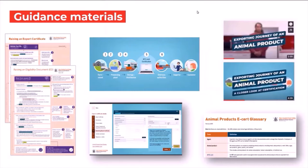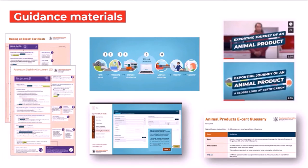I'll now pass over to Dan, who's going to talk you through some of our guidance materials. Recently, our team put together some guidance materials for users of AP eCert. On the left-hand side, you'll see two quick reference guides for raising an export certificate or raising an eligibility document. These are designed to be printed out and put next to your computer while you're raising them — it's like a checklist of everything you need to check, things to watch out for, the format for putting things in certain boxes like source certificates, and things to check off before you hit Submit.